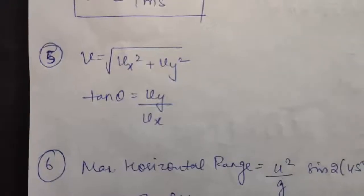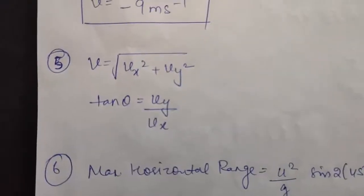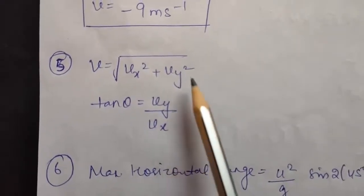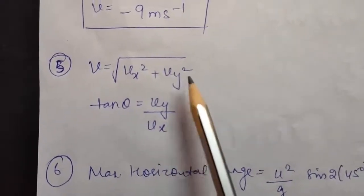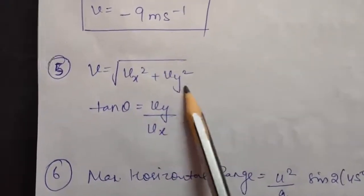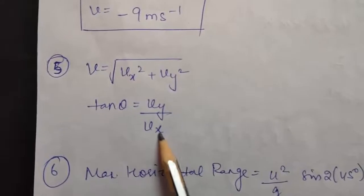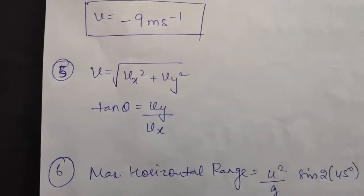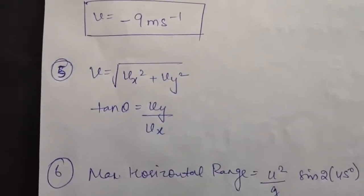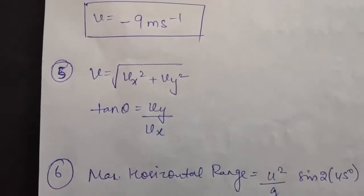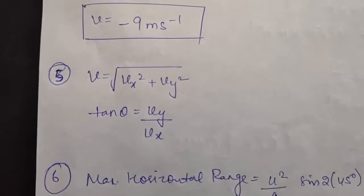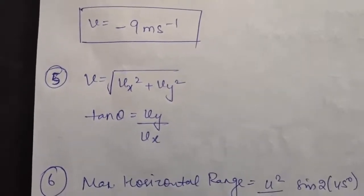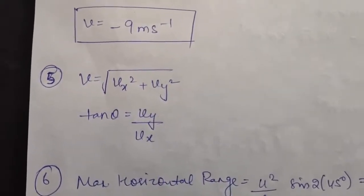In question number 5, you just need to use the formula for magnitude of velocity and tangent theta as we did in question number 1. Use these formulas and you will get the same type of answer. It is an easy question — try it yourself; I am leaving it for you.